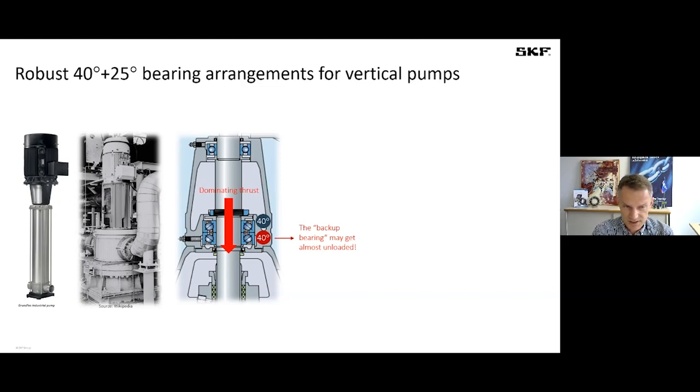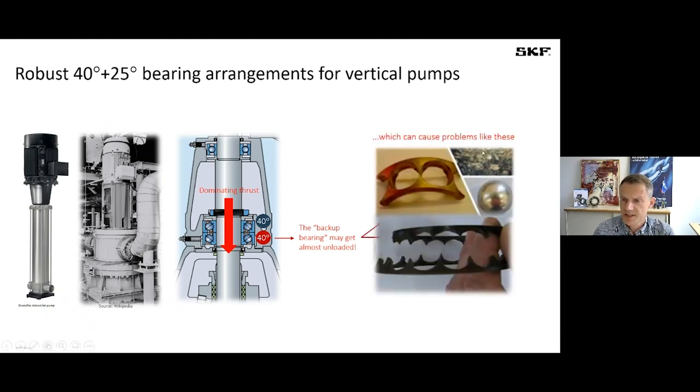You see some vertical pumps, typical ones on the left side, and in the middle you see a typical bearing arrangement, this time with two single angular contact ball bearings, and normally 40 degree bearings with 40 degree contact angle are used here. But in many cases you have then either due to the gravity force or other forces a dominating thrust load, and it might happen that one of these bearings that we call the backup bearing gets unloaded because the other one is loaded so much and there is movement displacement in the bearing set. Then this bearing gets unloaded and can get damaged. So if you see damages like those on broken cages or worn cages or balls that have smearing marks, you might have this problem of unloaded or too loaded backup bearing.